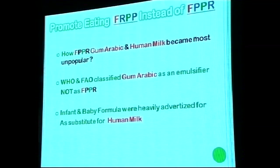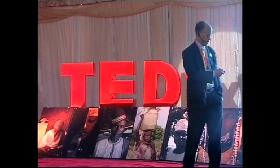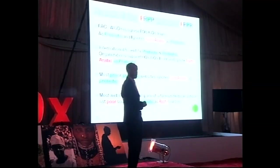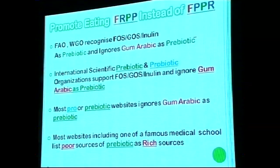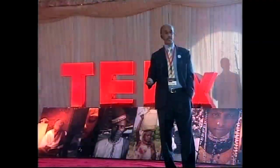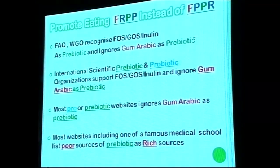Infant and baby formulas were heavily advertised as substitutes for human milk. Furthermore, the World Gastroenterology Organisation recognized FOS, GOS, and inulin as prebiotics — but these are industrial, unnatural prebiotics. Natural prebiotic gum arabic was ignored. Similarly, most websites discussing prebiotics make no mention of gum arabic at all.